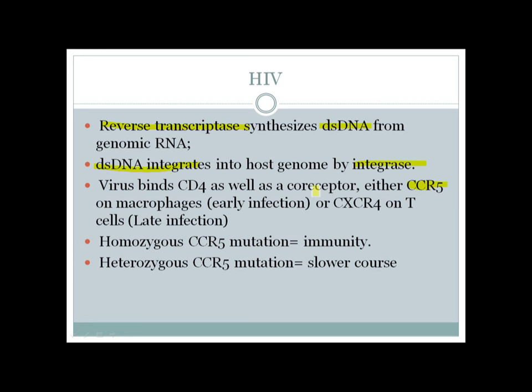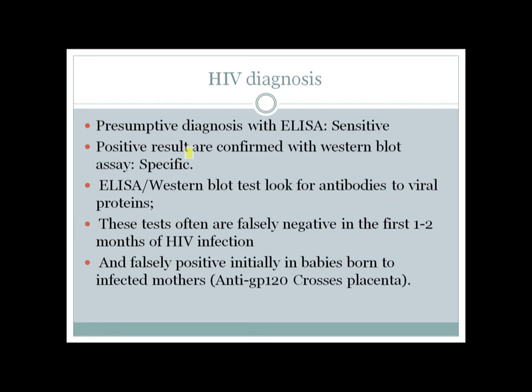HIV can bind CD4 as well as a co-receptor — either CCR5, which is important on macrophages in early infection, or CXCR4 on T cells in late infection. If there is a mutation of CCR5, it will prevent HIV from getting inside immune cells. A homozygous CCR5 mutation confers immunity to HIV, while a heterozygous CCR5 mutation results in a slower course of HIV.